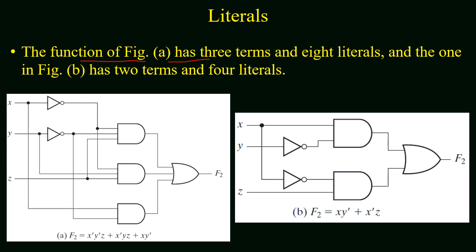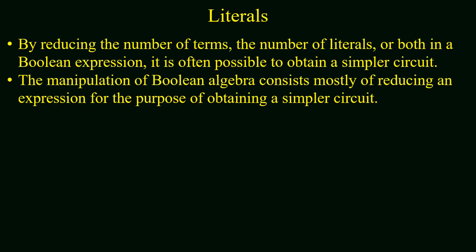Continuing from the last example of function f2, which was implemented in normal form and then in simplified form: figure a represents function f2, and figure b represents the same function in simplified form. The function in figure a has three terms — the first term has three variables, the second term has three variables, and the last term has two variables. These variables within a term are known as literals, so the function in figure a has a total of eight literals, while the function in figure b is a sum of two terms with two literals each, giving a total of four literals.